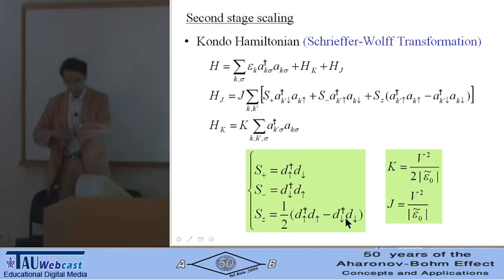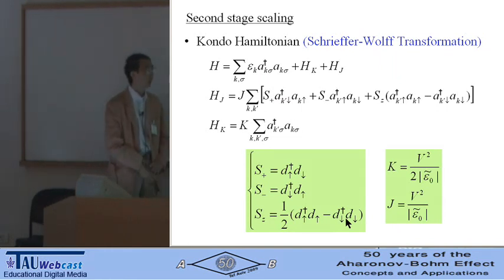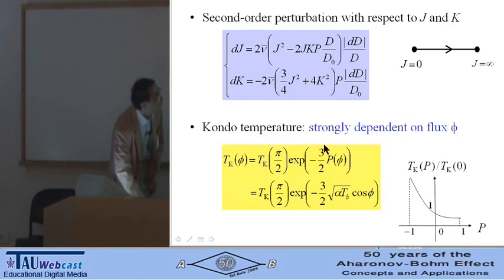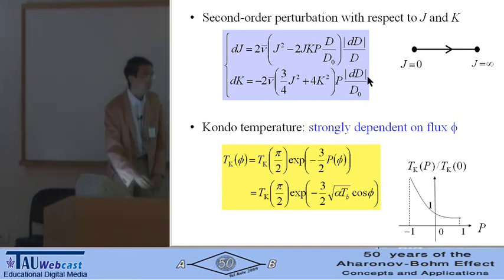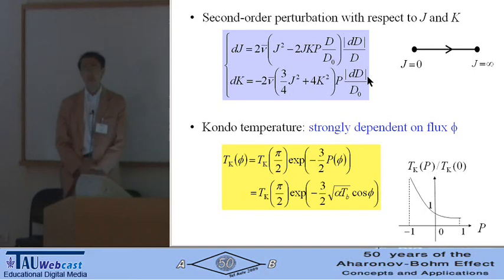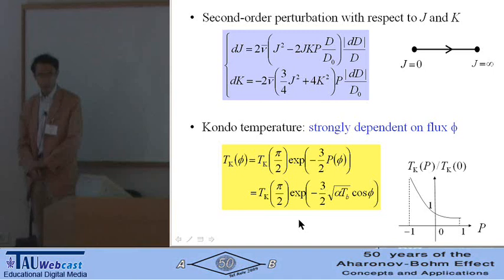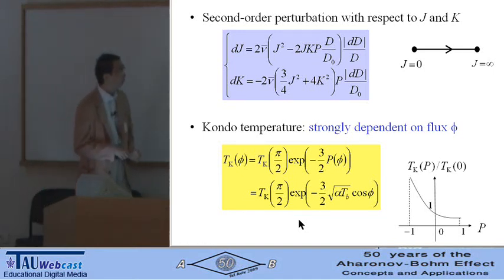In the second stage scaling, we make the Kondo Hamiltonian by the Schrieffer-Wolff transformation, and we have exchange coupling times by J and potential scattering times by K. J and K are renormalized by this scaling equation. Finally, we obtain the analytical expression for the Kondo temperature. This is our final result. The Kondo temperature is strongly dependent on the magnetic flux φ.